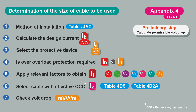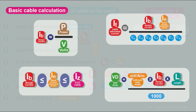It's very important to understand the design principles before using Appendix H — we'll talk about that in another video. The steps to determine cable size are all based on Appendix 4 of BS 7671: work out the method of installation, calculate the design current IB, select a protective device IN, decide if overload protection is required, calculate IT — the tabulated current after correction factors — then select the cable with effective current-carrying capacity from tables 4D5 or 4D2A, and finally check the voltage drop. We'll be doing calculations for lots of different circuits in the next videos.